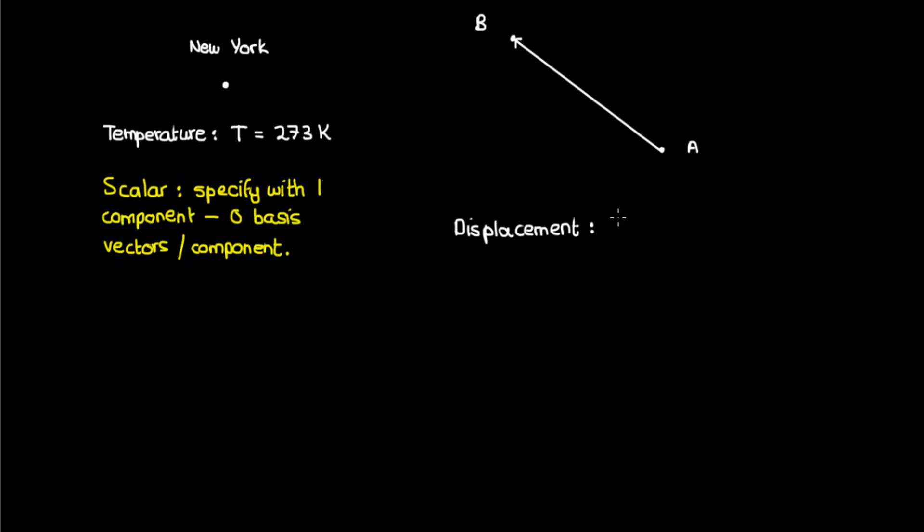Well, in this case, I would need to give you the magnitude of the displacement, which is about 22.5 kilometers, as well as the direction of the displacement, which is of course in the direction specified by the vector AB. Therefore, I would need a vector—a quantity that has both a magnitude and a direction—to specify the displacement between the airport and the Empire State Building.